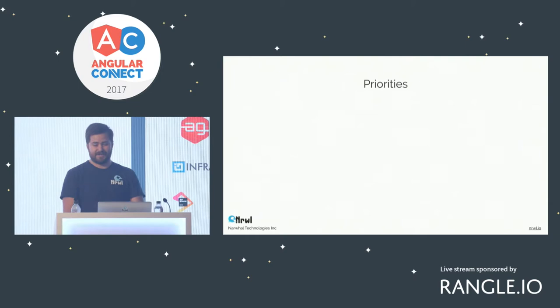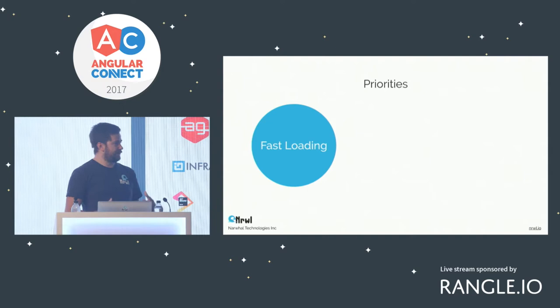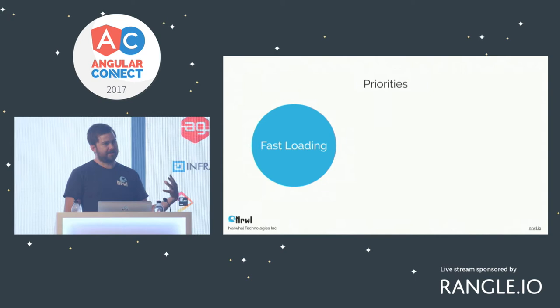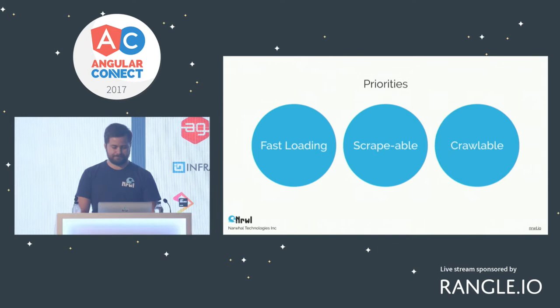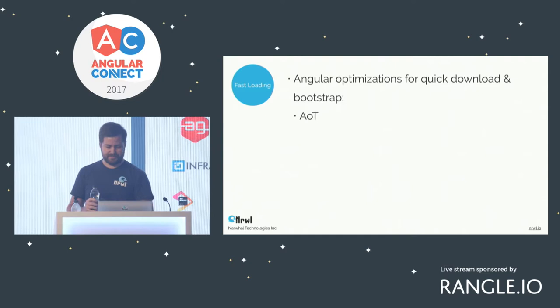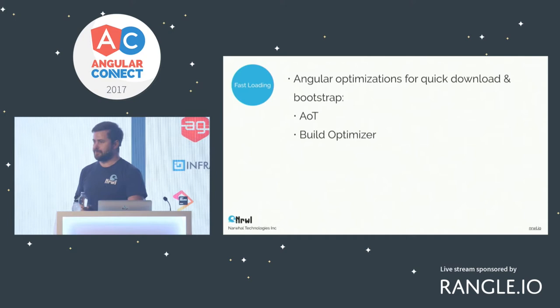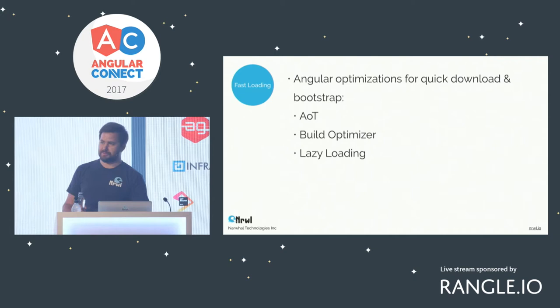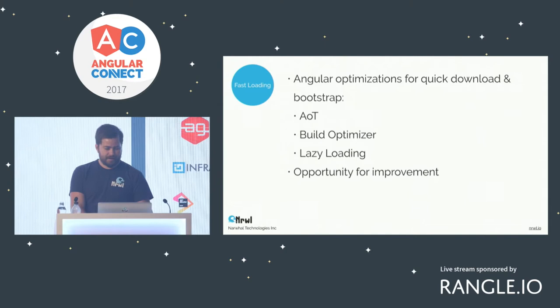Pre-rendering exists to satisfy three priorities. We want apps to be fast loading — and more importantly, perceived as fast — because there are multiple phases in how an app is loaded and displayed to the user. We want more meaningful content earlier on. We want apps to be scrapeable by social sharing scrapers, and we want them to be crawlable by search engine bots. For fast loading, Angular has things like AOT, the build optimiser which makes tree shaking more powerful in Angular CLI, and lazy loading so developers can control when parts of the application get loaded.